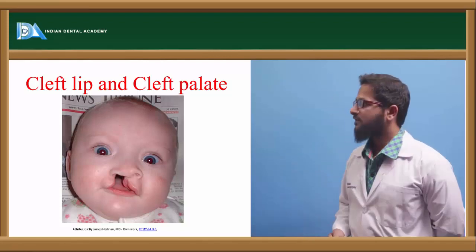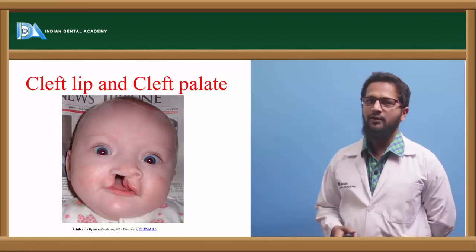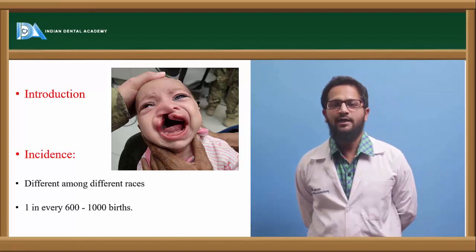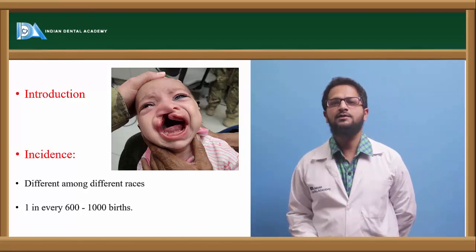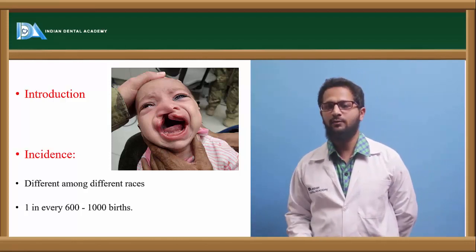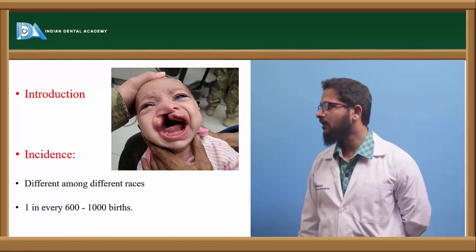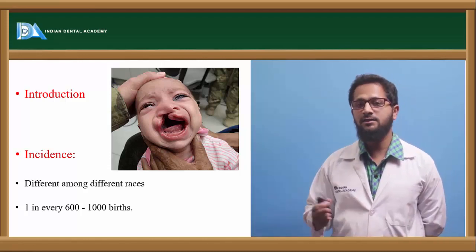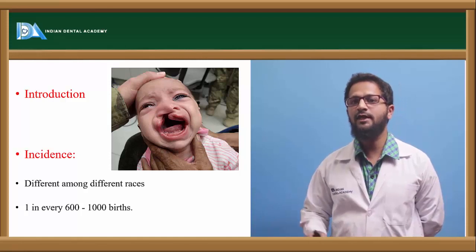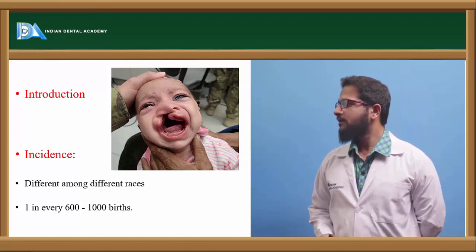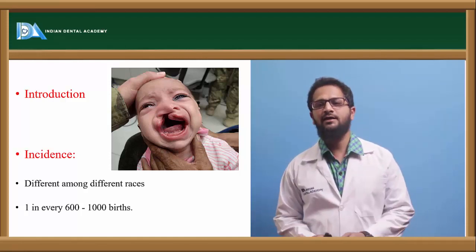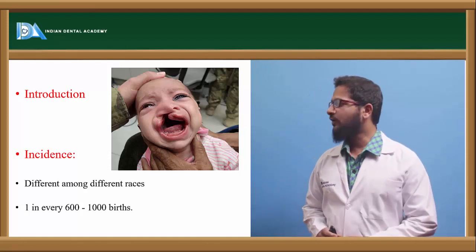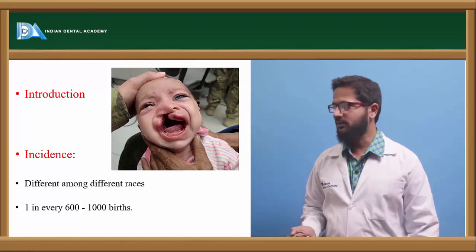Hello everyone. The topic for discussion today is cleft lip and cleft palate. Cleft lip and cleft palate are one of the most common occurring congenital deformities with which children are usually born. They are actually not life-threatening until and unless they are complicated by some other syndromes which usually have systemic complications. The incidence of cleft lip and palate is different among different races — it is actually one in every 600 to 1000 live births.